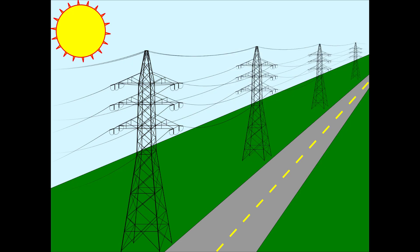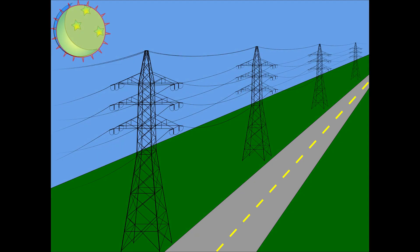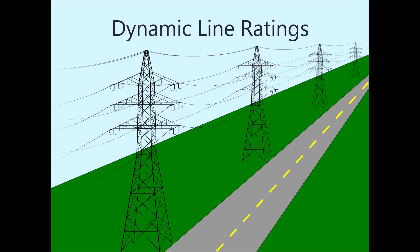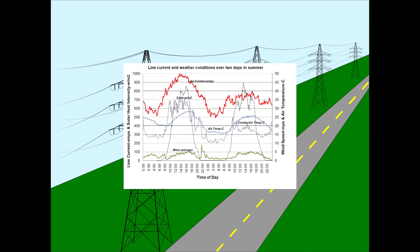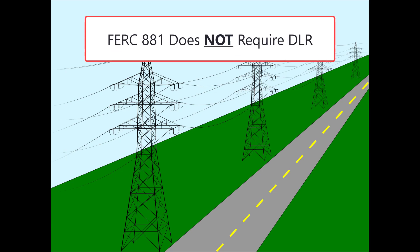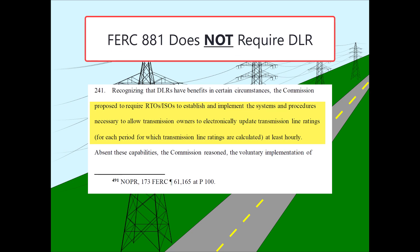Also, while not technically required by FERC Order 881, you may also see references to additional ratings for nighttime events to account for absence of solar heating. Dynamic line ratings, or DLR for short, take the concept of ambient adjusted ratings a step further, stating that ambient conditions are continuously changing and therefore line ratings can be continuously adjusted based on actual field-measured ambient conditions in real time. FERC Order 881 does not require the use of dynamic line ratings, but it mentions that systems should be in place to accept continuously varying ambient conditions and be able to adjust line ratings in real time.